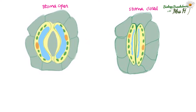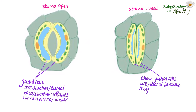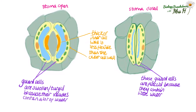We are looking at an open and closed stoma. When the stoma is open, it is because the surrounding guard cells have a high water concentration in their vacuoles, so the guard cells are turgid, and that causes the stoma to open. The stoma is closed when the guard cells have little water in them, so they become flaccid and they close the stoma. Guard cells have a thicker inner cell wall which is less flexible than the outer cell wall, and it is this difference in flexibility that causes the cells to bulge when the guard cells are turgid, therefore opening the stoma.